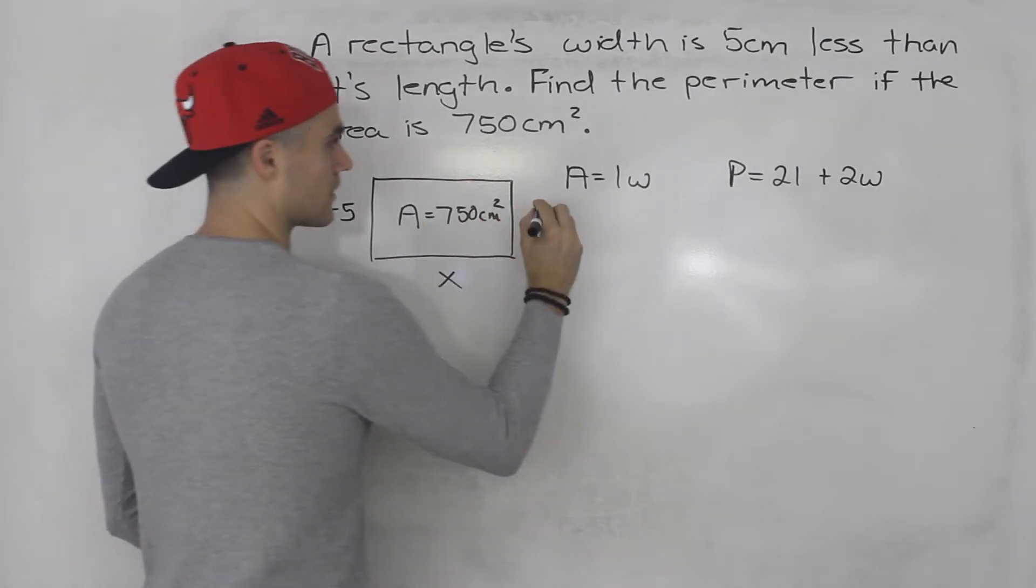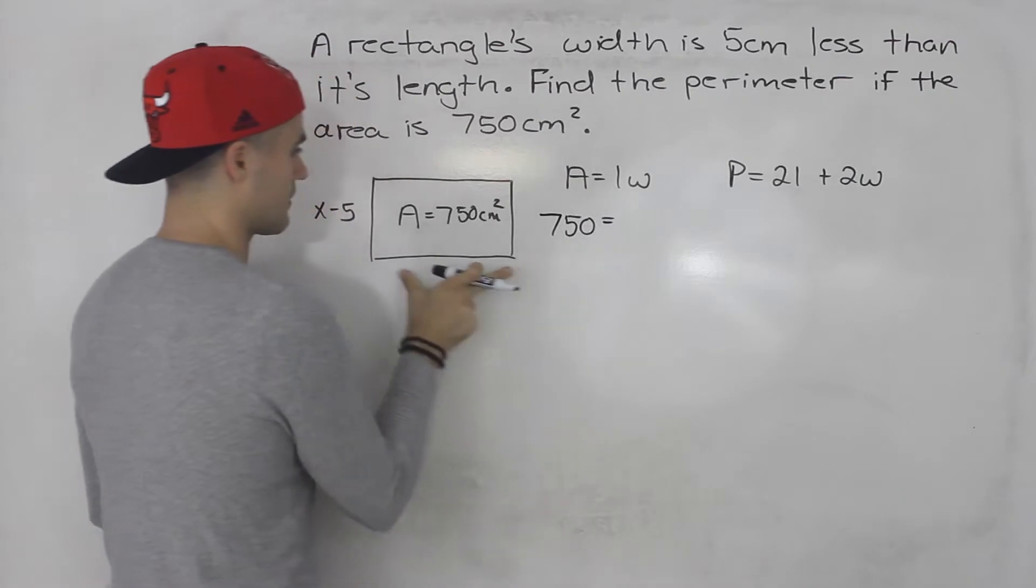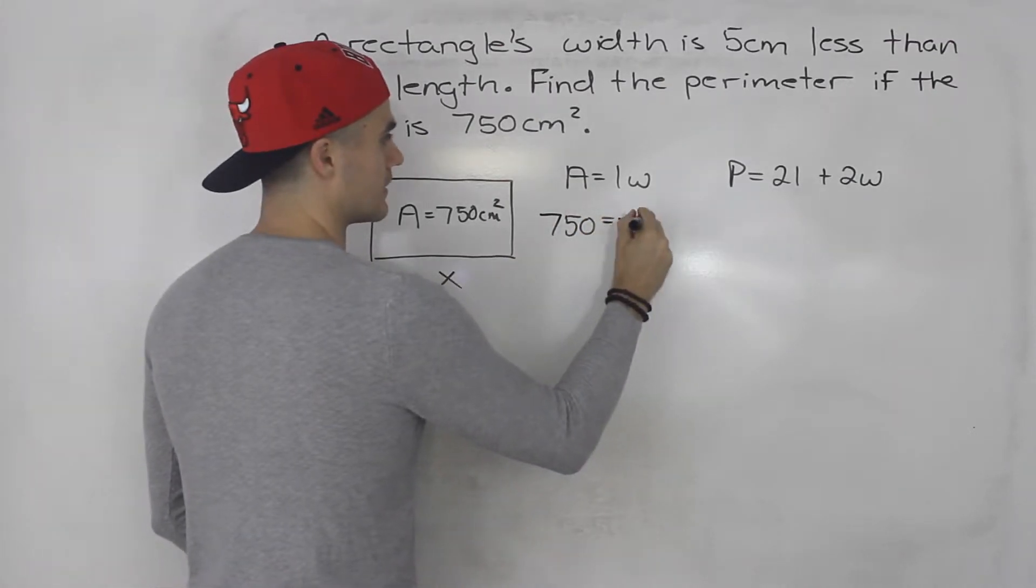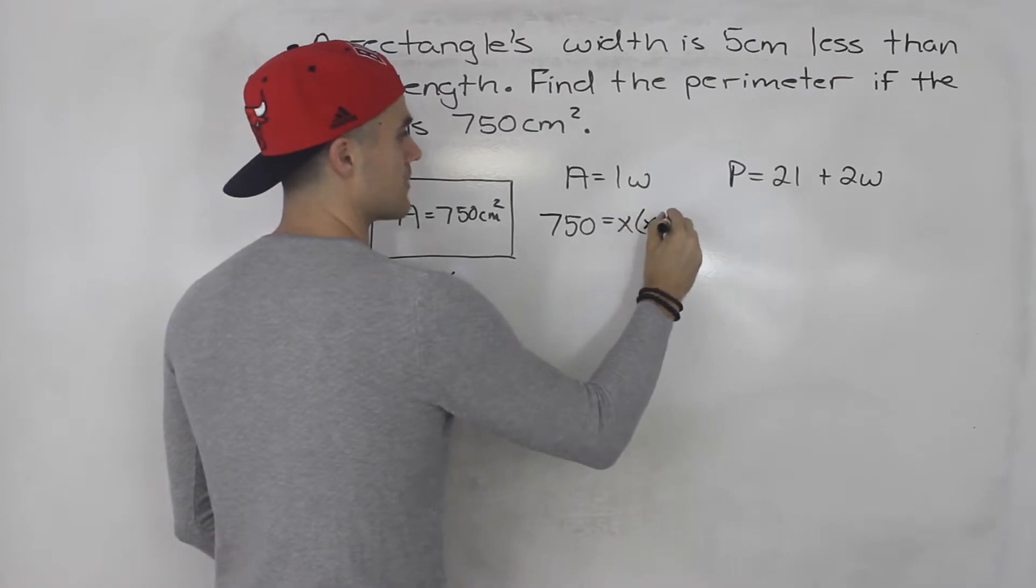So we're told the area is 750, the length we let equal x, and then the width is x minus five.